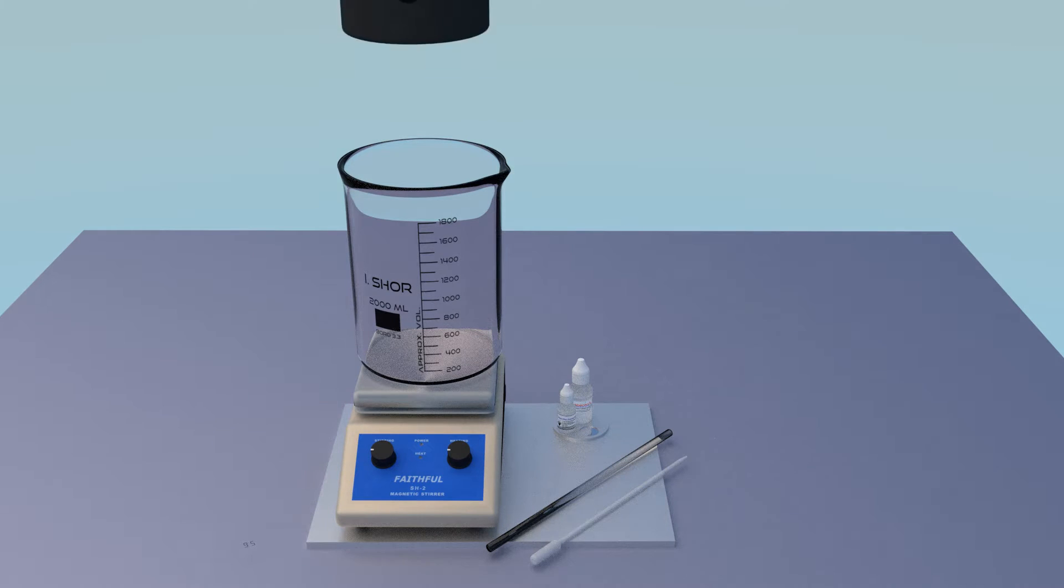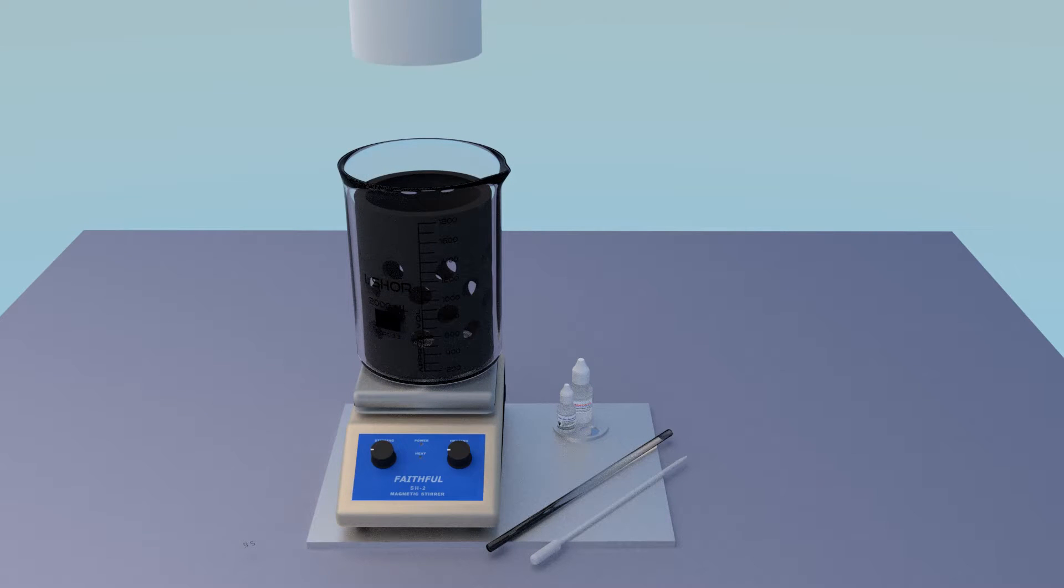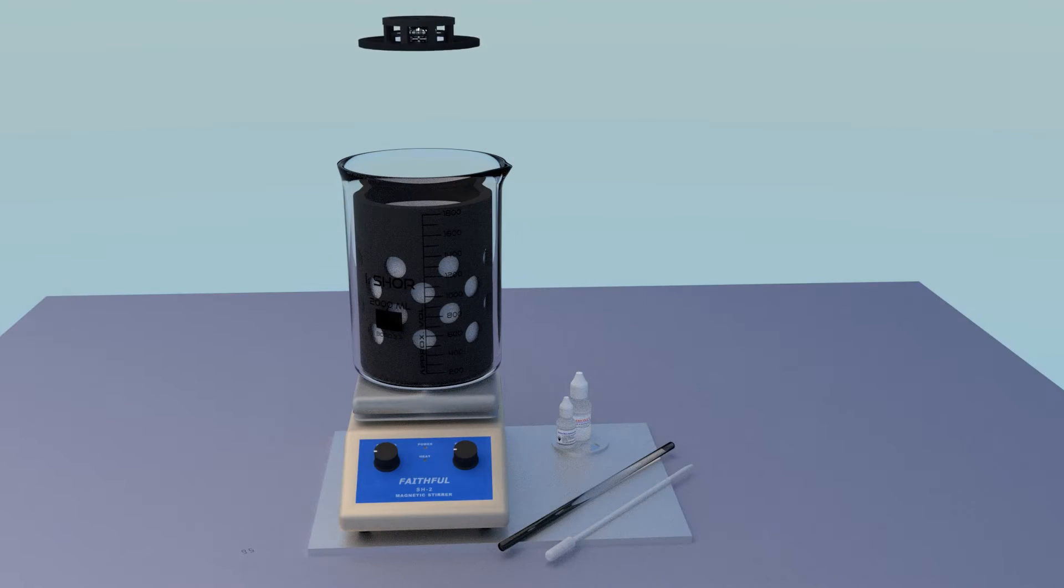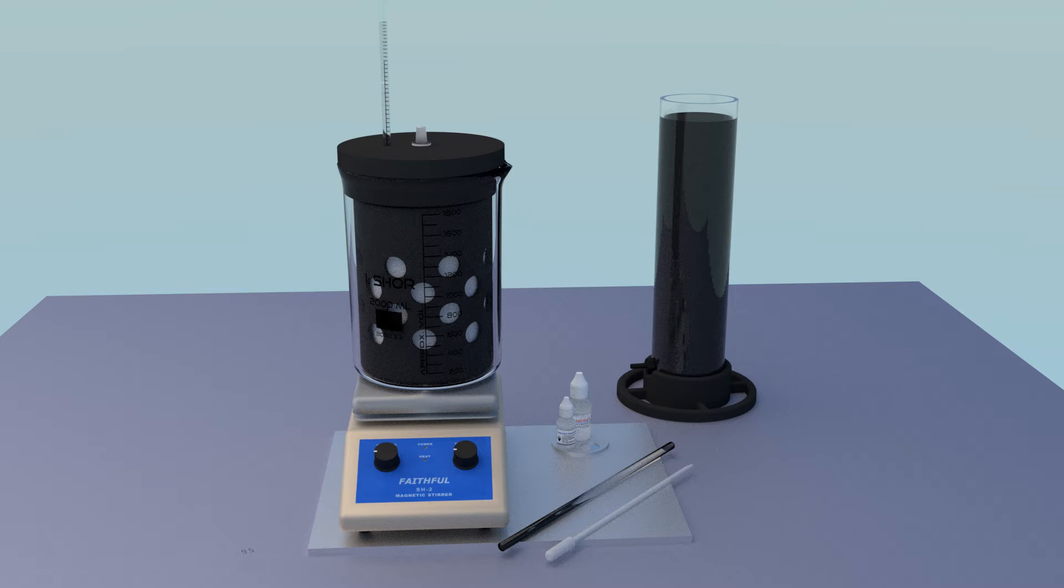With basket, filter filter pouch, stir bar and stir bar cage, cap, thermometer and quick connect, scrubber with treated activated charcoal.